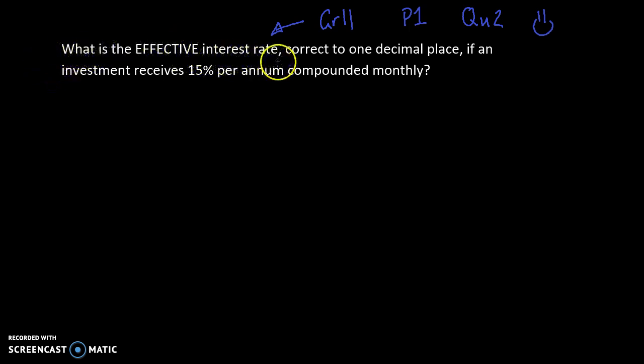What is the effective interest rate, correct to one decimal place, if an investment receives 15% per annum compounded monthly? The whole thing about effective interest rate and nominal interest rate is that we need to figure out what it would be if it was compounded annually. So we're changing it from compounded monthly to what it would be if it were compounded annually.